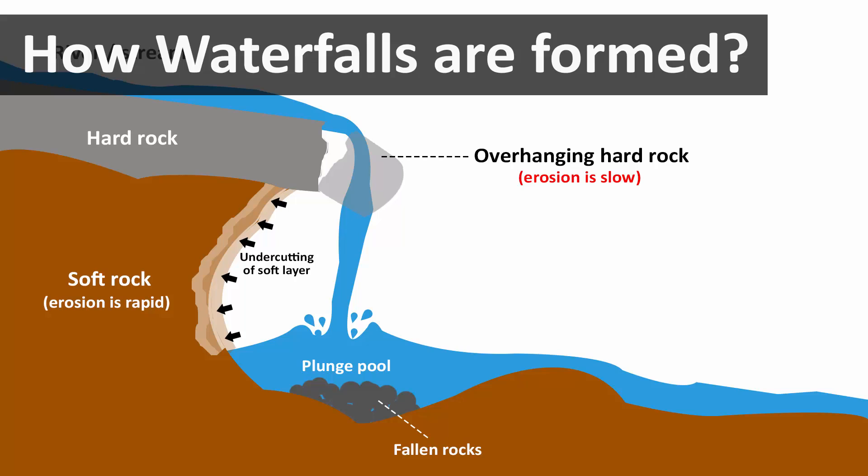In this video, we will learn how waterfalls are formed. It is basically a stream of water or a river that flows over the edge of a cliff and then falls vertically downward.